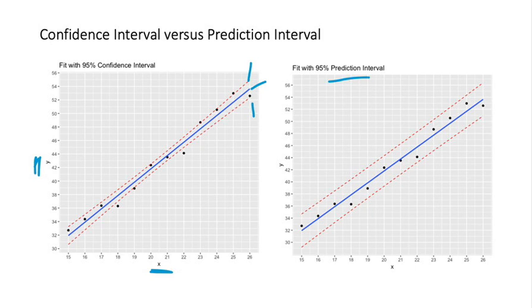Now we have prediction intervals which tell us something about the individual points. It's saying that we are 95% confident that an individual point would lie between these two values.